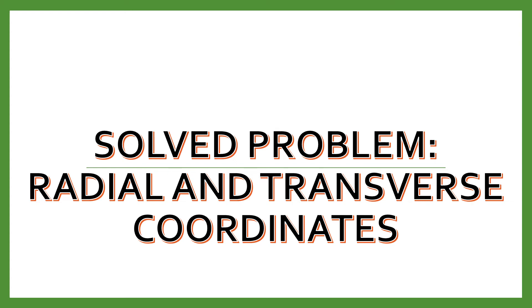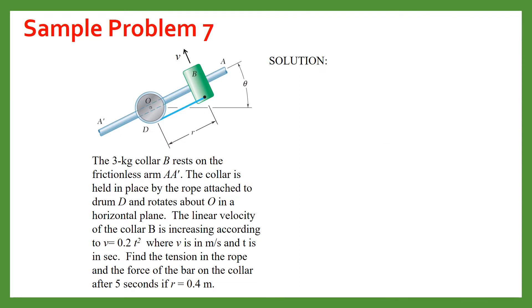Welcome dear students in this video we will solve one problem related to radial and transverse coordinate. So this is our problem the 3 kg collar is rest on arm AA' and this collar is held in the place with the help of this rope attached to the drum and it rotates about 0.0 this is 0.0 in the horizontal plane.